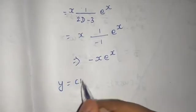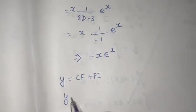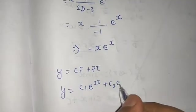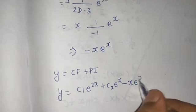So my final answer will be y = CF + PI: C₁e^(2x) + C₂e^x, and my PI is -xe^x. So this is my final answer.